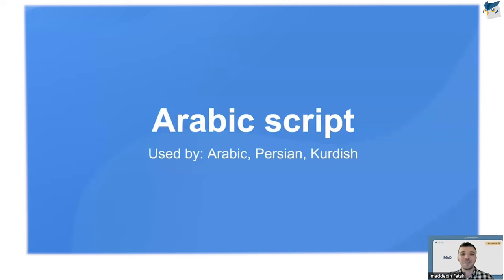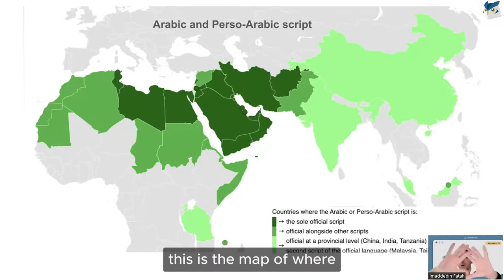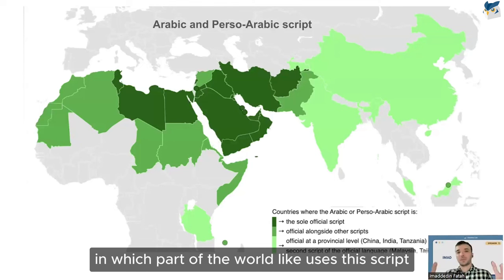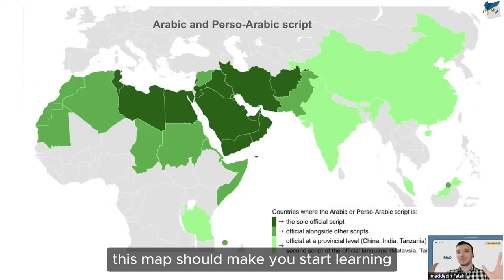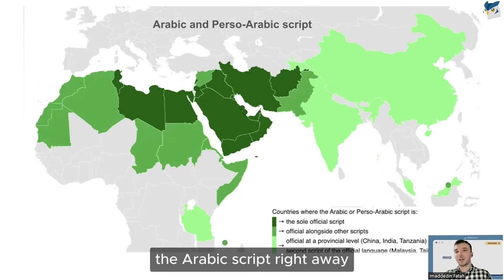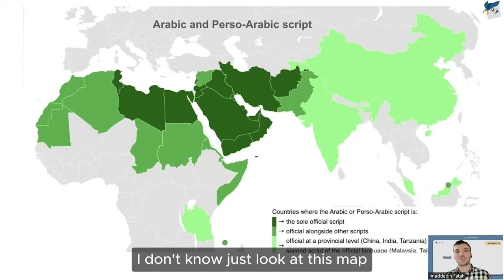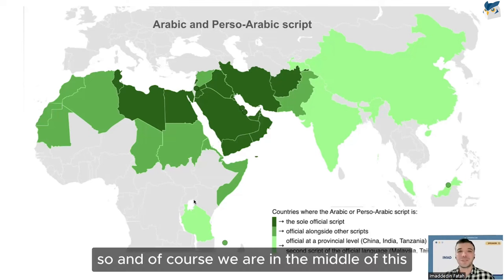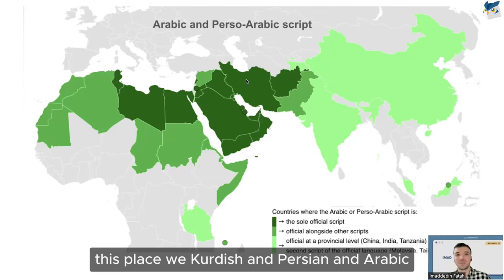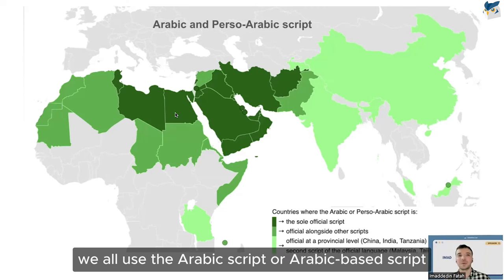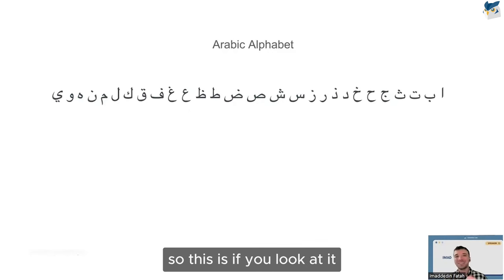Next we'll talk about the Arabic script. This map shows where in the world the Arabic script is used — either as an official script or alongside others. Just looking at this map should motivate you to learn the Arabic script right away, because of how widespread it is. It covers roughly half the world. Kurdish, Persian, and Arabic all use the Arabic script or Arabic-based scripts.